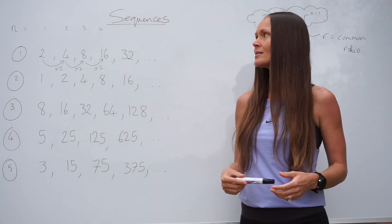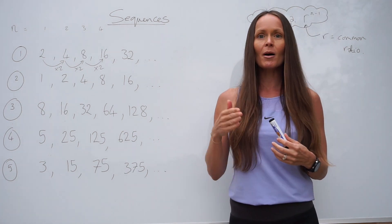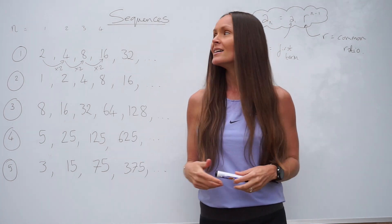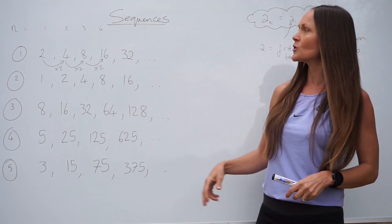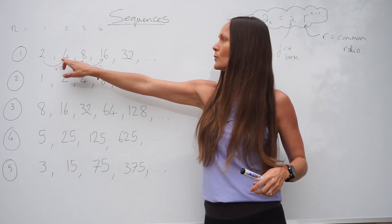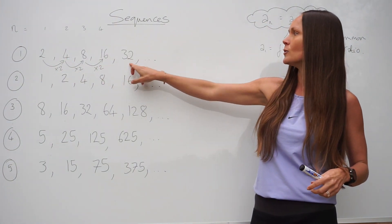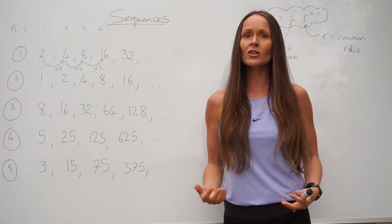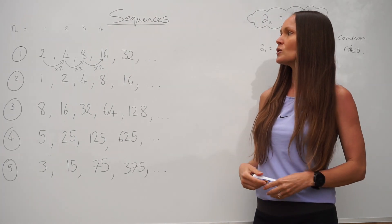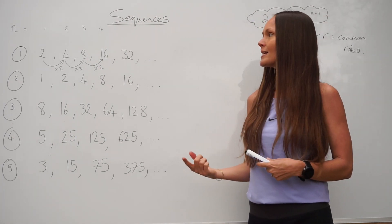A geometric sequence is when you're multiplying by the same number throughout the sequence to find the next term. So if we look at question 1, these are the numbers in the sequence: 2, 4, 8, 16 and 32. You should be able to see that each time you're multiplying the numbers by 2 to work out the next number in that sequence.